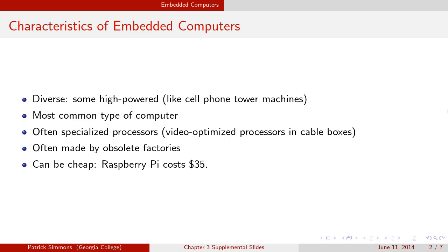One example would be the computer processors in cable boxes. If you have a little box that you rent from your cable company, that box is in charge of decoding video, which is a pretty resource-intensive task. But the processors are cheap and low-powered, because they're specialized — they have special hardware devoted just to decoding video. So those computers in cable boxes can decode video very quickly, but can't do anything else very fast at all. This keeps the cost of cable boxes down because they can use these low-cost processors.